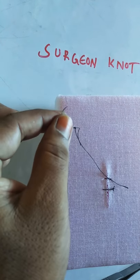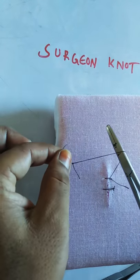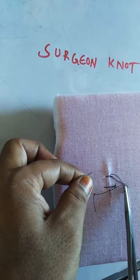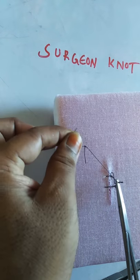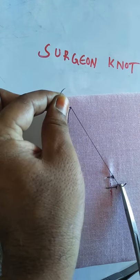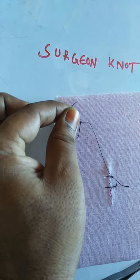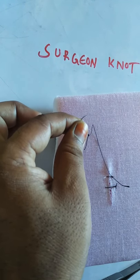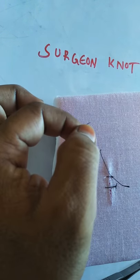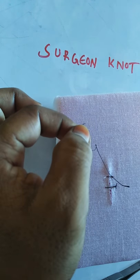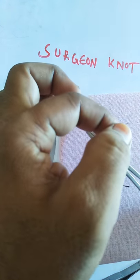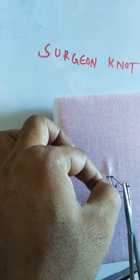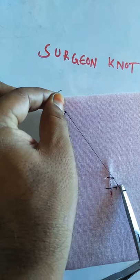The second tie must be made in the anti-clockwise direction. You have to grab the small end again and make a tie. For security, you can make another tie in the clockwise direction — one throw, holding the small end and making the tie.